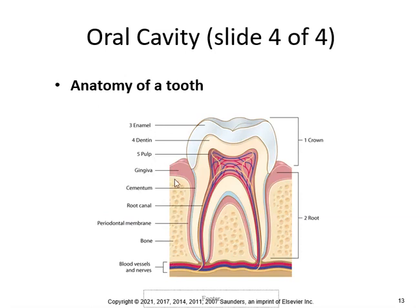Here's the anatomy of the tooth. The layers are the enamel, the dentin, and the pulp. Here's the crown, here's the root, the bone, and here's the root canal. If you get pain there, they may have to go in and do a root canal procedure.